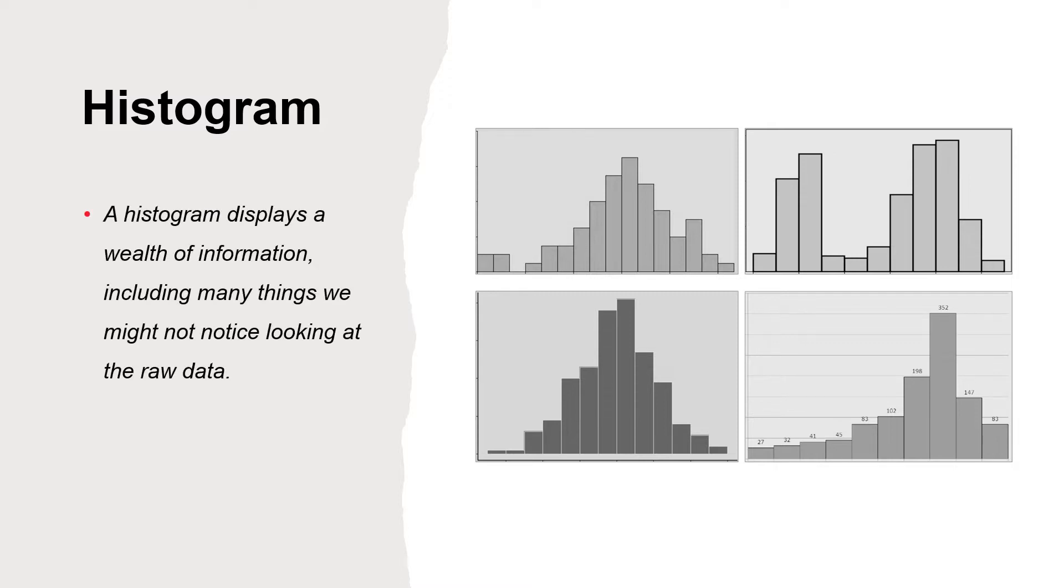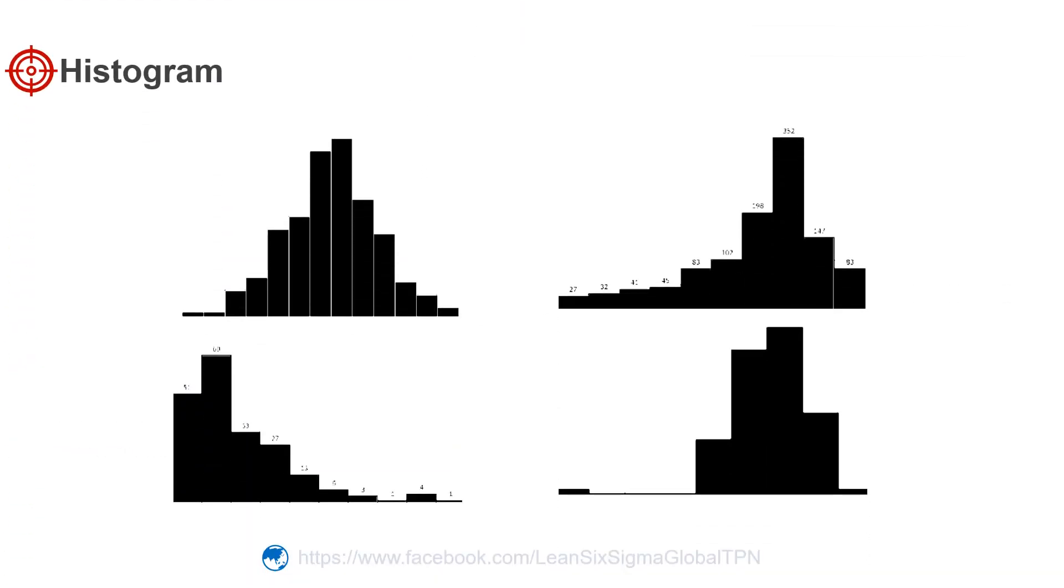This histogram displays graph information including many things we might not notice looking at the raw data. Look at the shape: is this unimodal or bimodal? The graph may be symmetric or skewed.